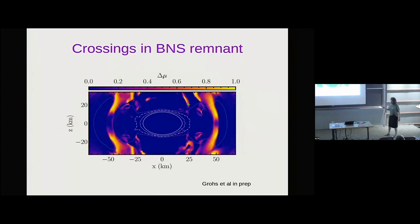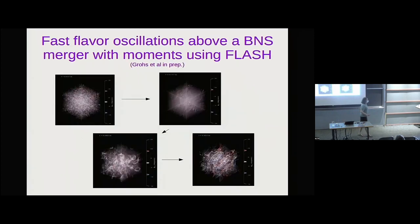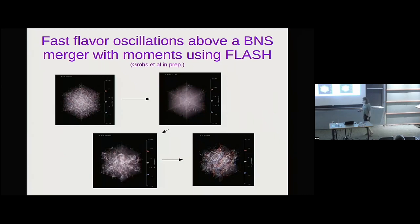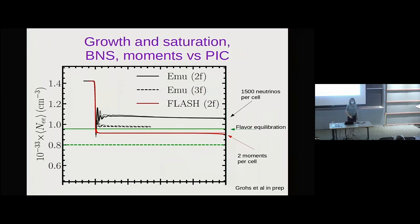Let's give it a try for this point above the neutron star merger and see what happens. Instead of the movie, here are some stills: this is the initial perturbation, this is during the growth phase, this is when you saturate, and this is as you continue to evolve. This is what happens to the phases. But the phases don't tell you so much about the physics — what might tell you is looking at what happens to the number density of electron neutrinos, because that's ultimately what we want to know.